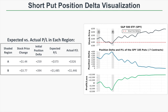In shaded region B, the stock price increased by $3.77. At the beginning of that period, the position delta for these seven short puts was plus $394. With a $3.77 increase in the stock price, we were expecting to make $1,485. In reality, the position actually gained $1,446 — only $40 different from the expected amount. So in both cases, position delta was very accurate in predicting our profits and losses based on directional movements in the stock price.